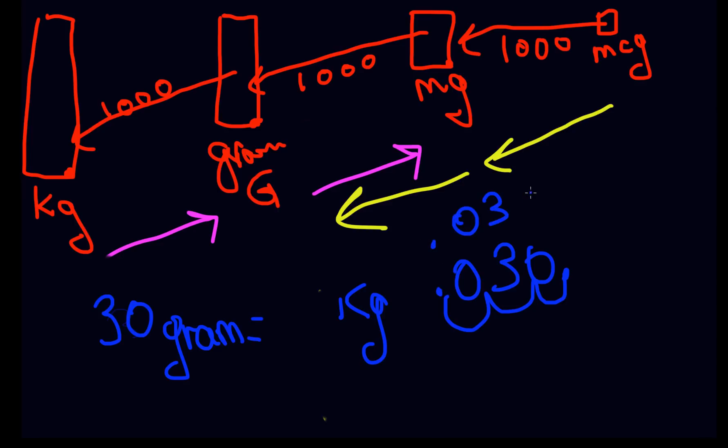The way that you write that is not, does not equal, is not 0.030. There are no trailing zeros. So you put your zero in front of the decimal point, and that's your answer. 0.03. 30 grams equals 0.03 kilograms.